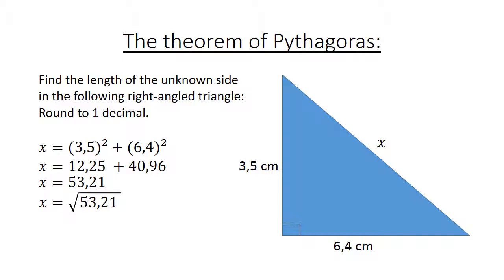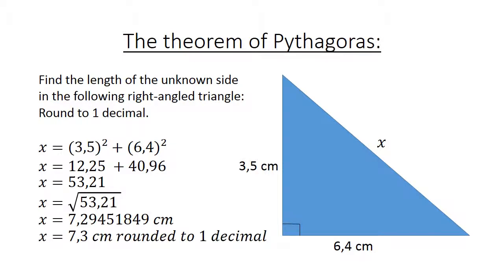X equals the square root of 53.21. X equals 7.29451849 centimeters. But remember to round it to one decimal. X equals 7.3 centimeters.